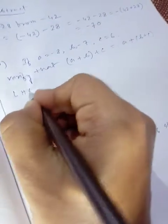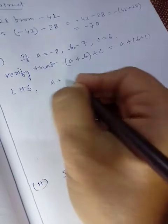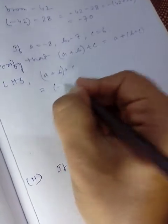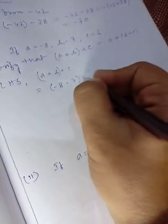So LHS, if you write like this it should be good: (a + b) + c. So a equals what? -8, -7, plus 6.